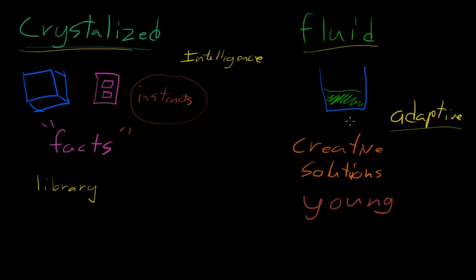When you're young, every single thing you come across is a new problem and you have to be adaptive to it. And then as you get older, you kind of have this been there, done that feeling. You've already seen all the new problems or you see less and less, and you just have a bigger repository of crystallized intelligence.